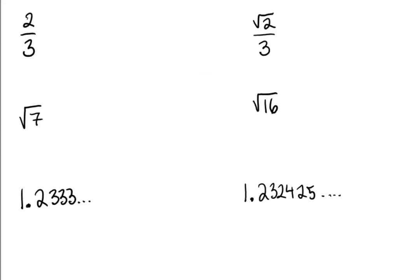So is two-thirds a rational number? The answer to this one is yes, rational. This number is rational because it is a ratio of integers.